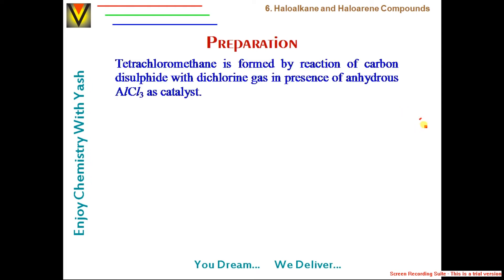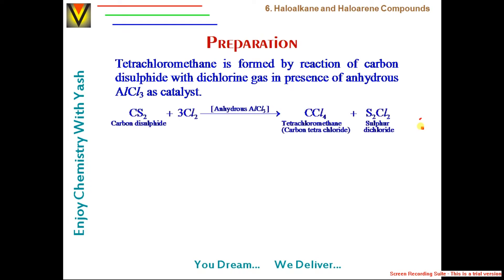Tetrachloromethane is formed by the reaction of carbon disulfide (CS₂) with chlorine gas (Cl₂) in the presence of anhydrous AlCl₃ as catalyst: CS₂ + 3Cl₂ → CCl₄ + SCl₂. Note that carbon disulfide has two sulfur atoms in the molecule.